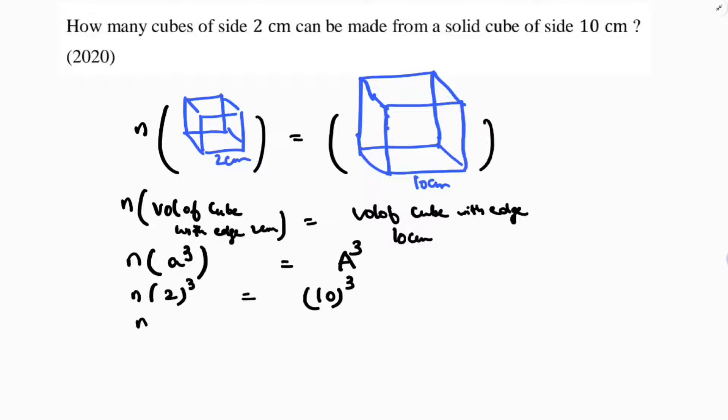So n is... 2³ you can write as 8, and here 10 into 10 into 10 for easy cancellation. So n equals 10 times 10 times 10 divided by 8, or 1000 divided by 8. 2 times 4, 2 times 5, 2 times 2, 2 times 5... So 5 times 5 is 25, 25 times 5 is 125. So 125 cubes of side 2 centimeters can be made from a solid cube of side 10 centimeters.